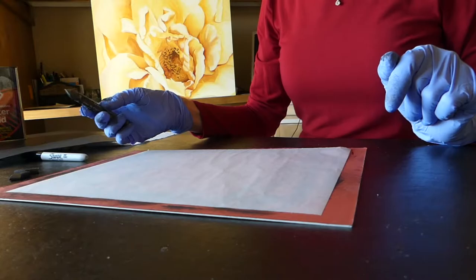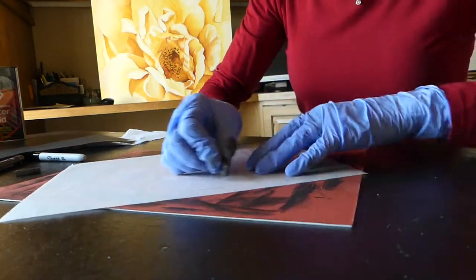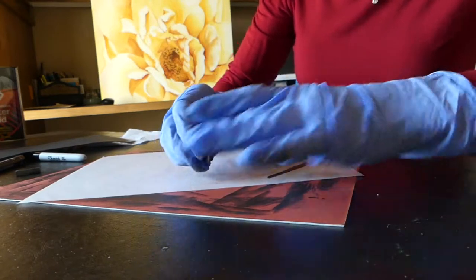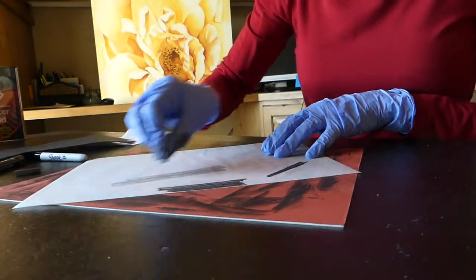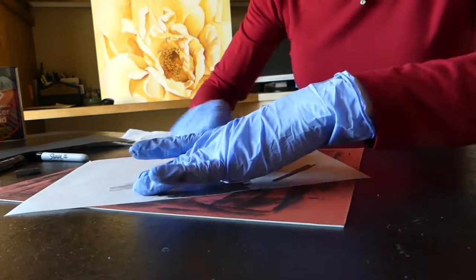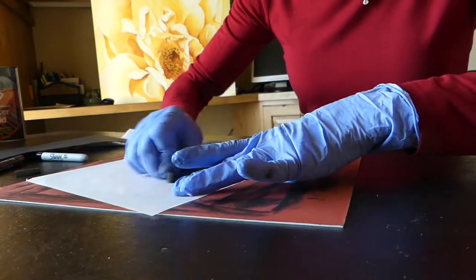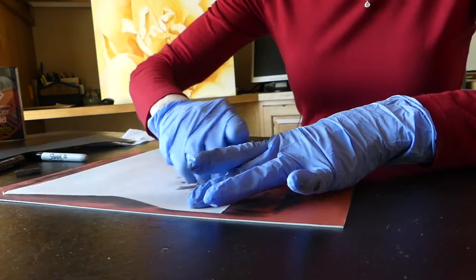So what you're going to do is you're going to go ahead and darken the page, and you're going to find it's real important not to just brush it across like this, but actually kind of like you would crayon in something. And you're just going to come across and get it all blackened. It's a little bit messy, and that's why you want to wear gloves.